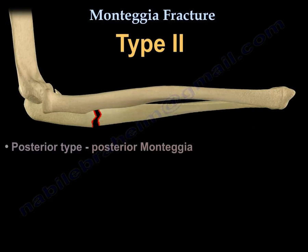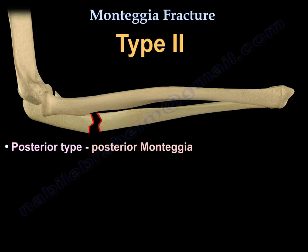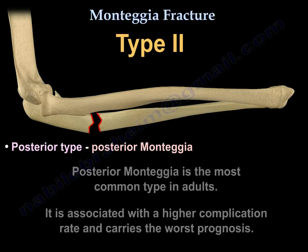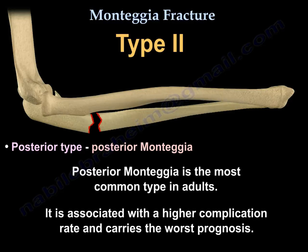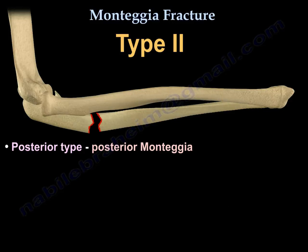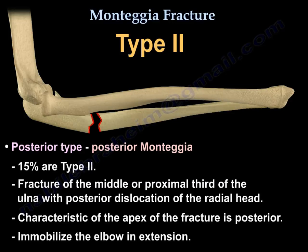Type 2 is the posterior type, called posterior Monteggia. It is the most common type in adults, associated with a higher complication rate and the worst prognosis. It accounts for about 15% of Monteggia fractures. It is a fracture of the middle or proximal third of the ulna with posterior dislocation of the radial head, with the apex of the fracture posteriorly. Immobilize the elbow in extension.